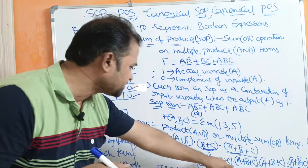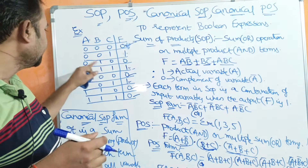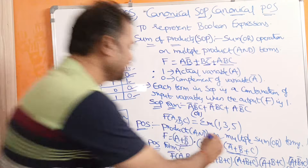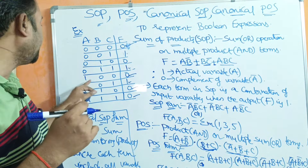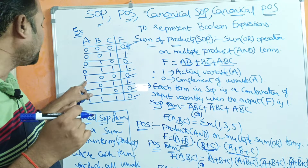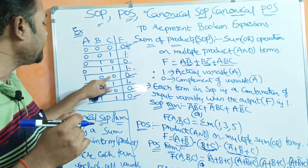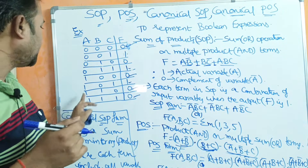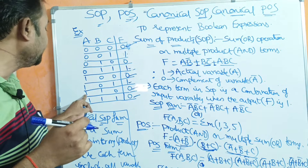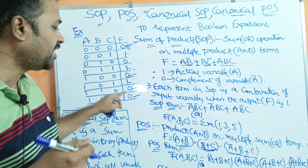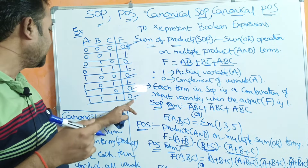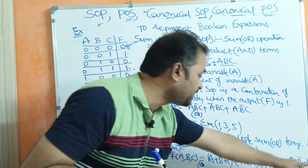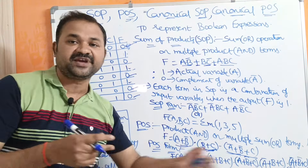F(A,B,C) = (A+B+C) · (A+B̄+C) · (Ā+B+C) · (Ā+B̄+C) · (Ā+B̄+C̄). The second combination gives A plus B bar plus C; third gives A bar plus B plus C; fourth gives A bar plus B bar plus C; and last gives A bar plus B bar plus C bar.